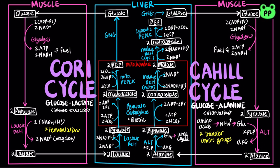The Cori cycle involves mitochondrial phosphoenolpyruvate carboxykinase to convert oxaloacetate to phosphoenolpyruvate. But during the glucose-alanine cycle, oxaloacetate is first converted to malate in mitochondria and reconverted back into oxaloacetate by malate dehydrogenase. Oxaloacetate is then converted to phosphoenolpyruvate by cytosolic phosphoenolpyruvate carboxykinase. In both cycles, the glucose generated by gluconeogenesis is transferred back to muscle cells.